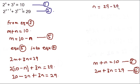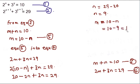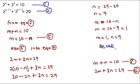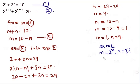Now that we have n = 9, we can find m using equation five: m = 10 − 9 = 1. So m = 1 and n = 9. However, we still need the actual values of x and y, which is the main thing we're looking for.